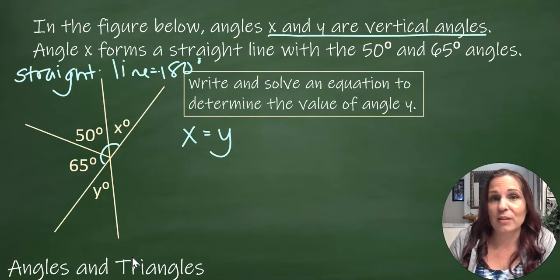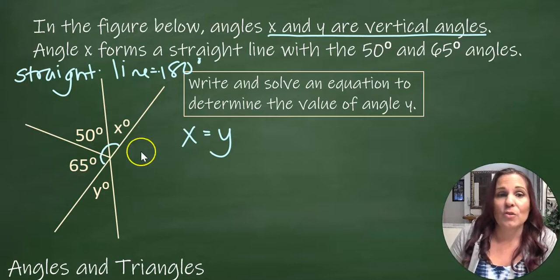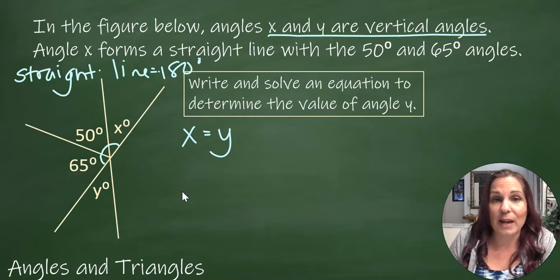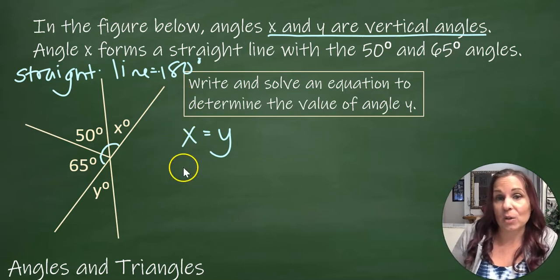So whatever equation I can write with X, I could also write it with Y instead. So I know that these three angles where I drew this little blue arc, they're all equal when I add them up to 180, because when I put them together I get a straight line.